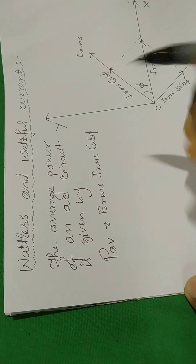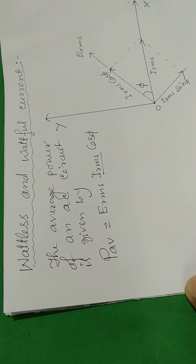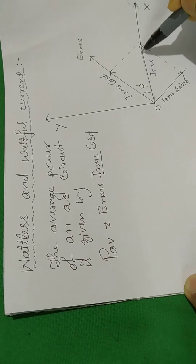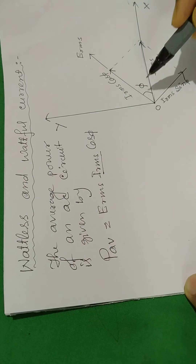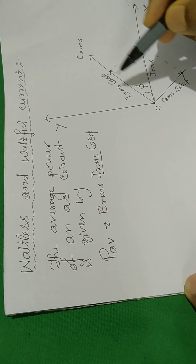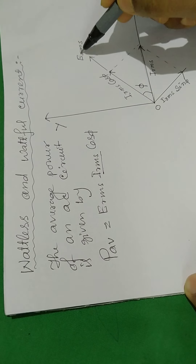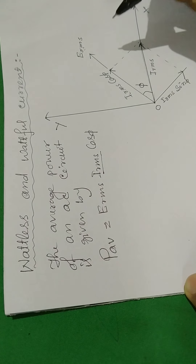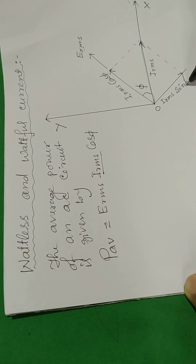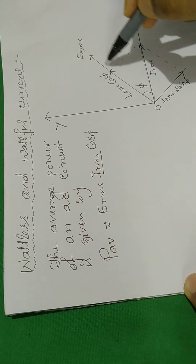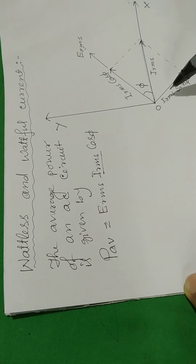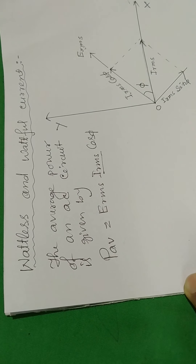The current I_RMS can be resolved into two components. You see the diagram — I_RMS is resolved into two components: one is I_RMS cosφ, which is along E_RMS, and the phase angle between I_RMS cosφ and E_RMS is zero. The other component is I_RMS sinφ, which is perpendicular to E_RMS, so the angle between E_RMS and I_RMS sinφ is 90 degrees or π/2.